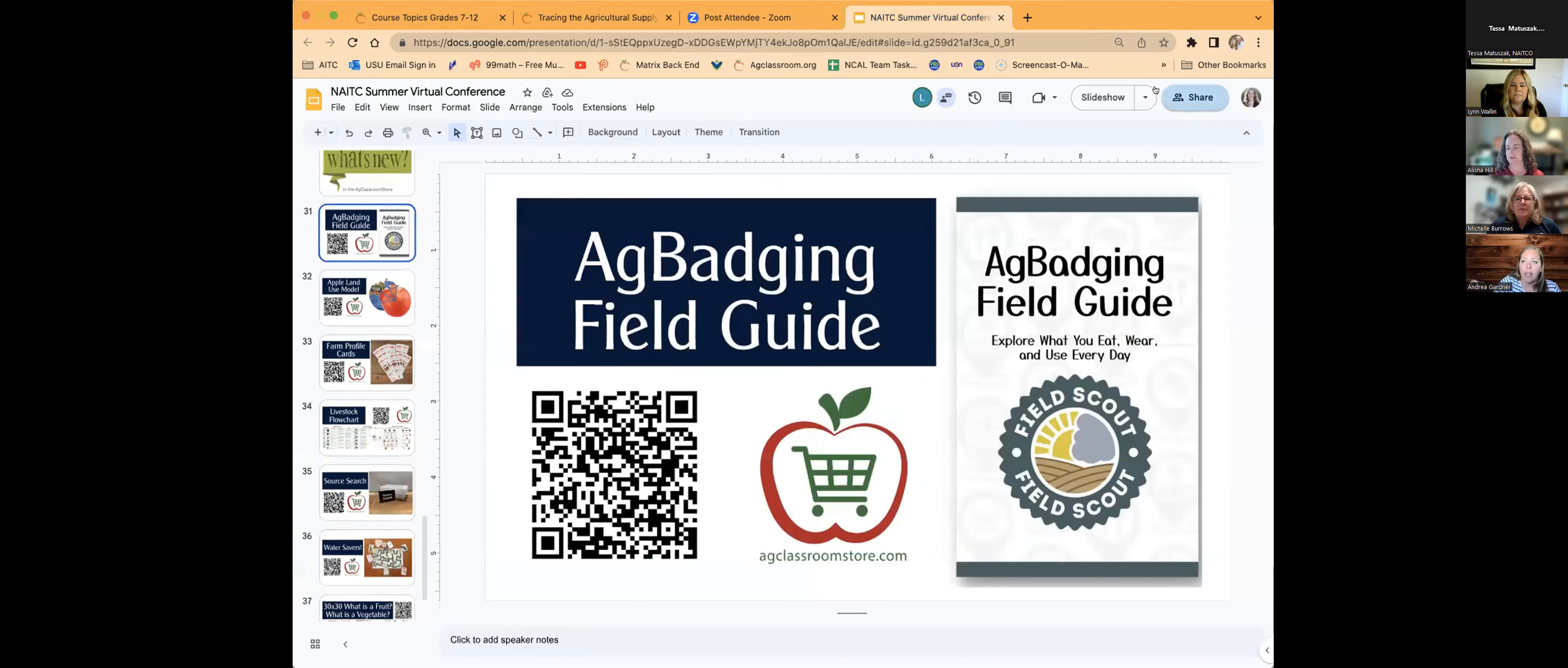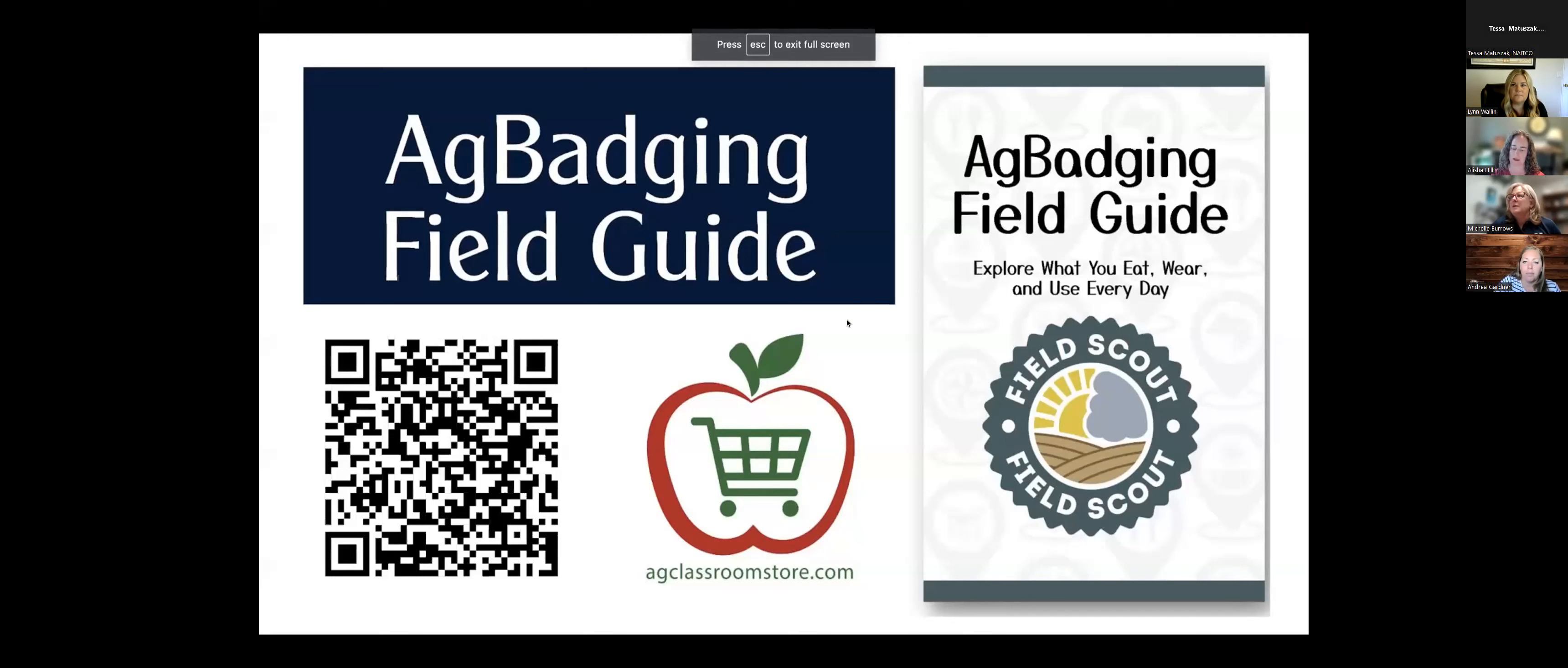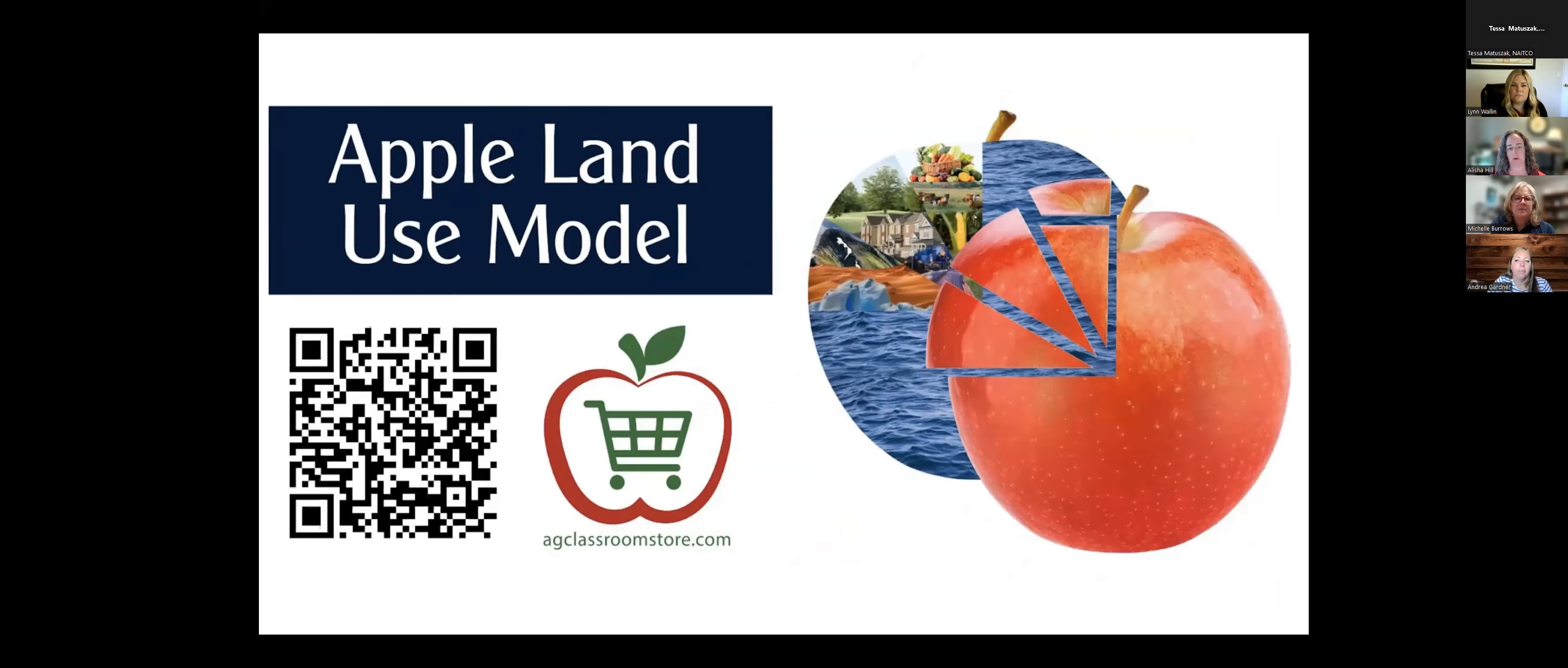I'm just going to quickly highlight some of the newest resources that we have in the store. The first one is the Ag Badging Field Guide, and there has been a lot of buzz about this field guide. If you attend Lynn's session later on this afternoon, she'll talk a lot more about it. But we have a limited number of field guides available that are for purchase. They can be purchased in a set of 30 for $9.60 plus shipping, or you can buy a case of 125 for $20 plus shipping. We just have a limited number of those available at this time. So if it's something that you're excited about, we encourage you to hurry and purchase those while you can. The QR code is just going to take you to the link to the item in the store.